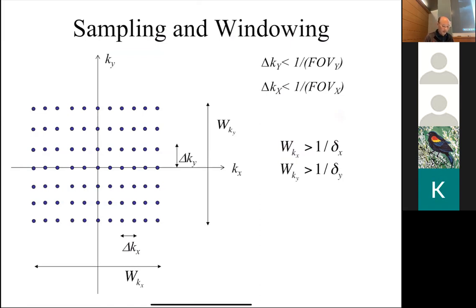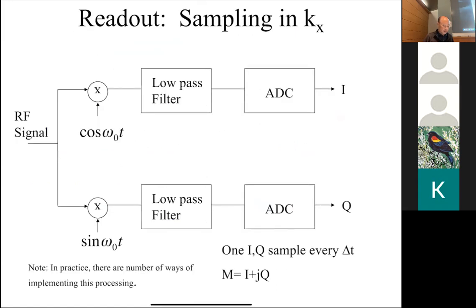Just remember, if you see rect of X over W, that's just a rect function of width W. In the MRI signal chain, the most basic approach is to demodulate into real and imaginary — in-phase and quadrature phase. Typically you pass it through a low-pass filter. The sampling along the KX direction is done by the A-to-D converter, giving your delta T samples every delta T.